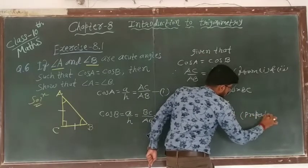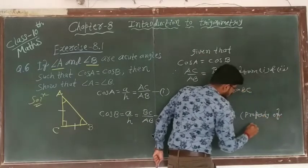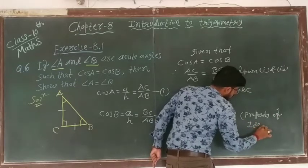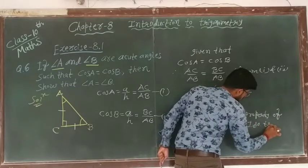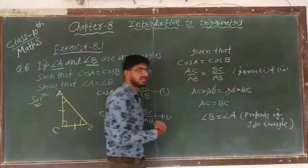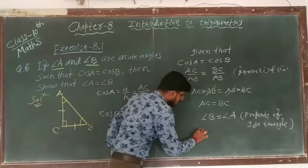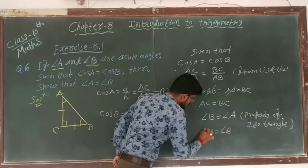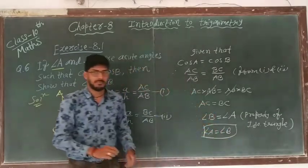Property of isosceles triangle. Okay, property of isosceles triangle. Also we can write angle A is equal to angle B. Hence proved.